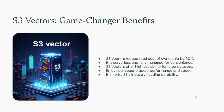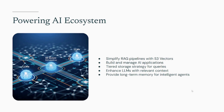S3 Vectors isn't just a standalone service — it's designed to integrate seamlessly into your existing AWS AI ecosystem. Amazon Bedrock Knowledge Bases: you can now use S3 Vectors as the underlying cost-effective vector store for your Bedrock Knowledge Bases, simplifying your RAG pipelines significantly. Amazon SageMaker Unified Studio: if you're building AI applications in SageMaker, you'll find S3 Vectors readily available for your vector storage needs. Amazon OpenSearch Service: this integration allows for a powerful tiered storage strategy — keep less frequently accessed or archival vector data in S3 Vectors for cost efficiency, then export high-priority vectors to OpenSearch for real-time ultra-low-latency queries when needed. You can also interact with it directly via AWS SDKs and the CLI.